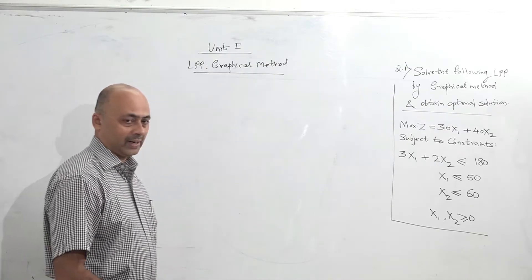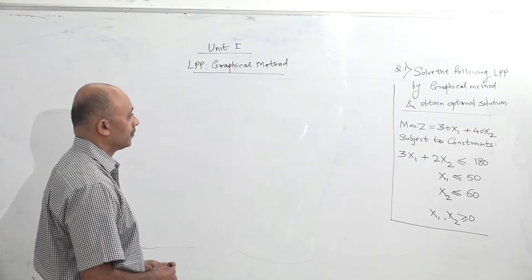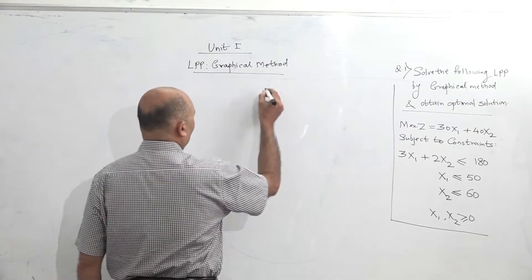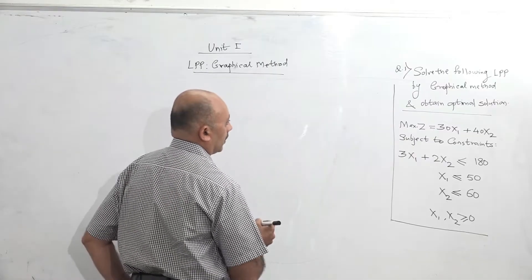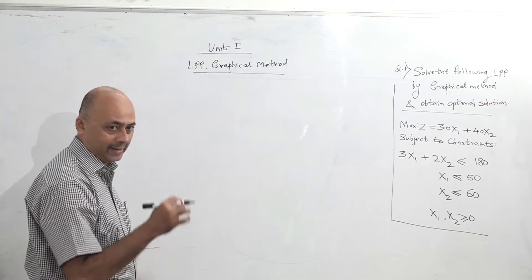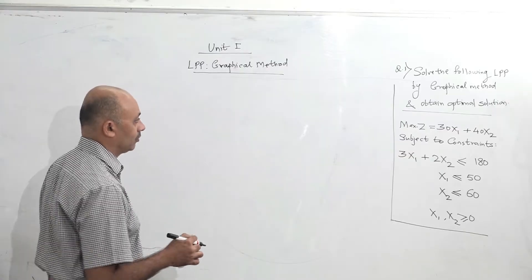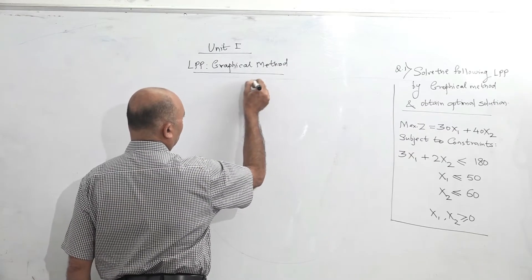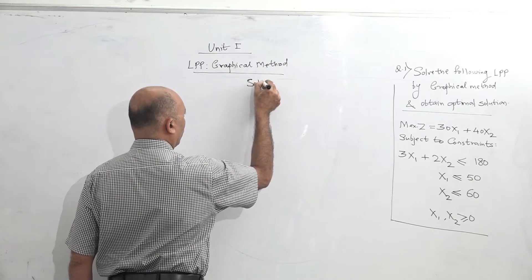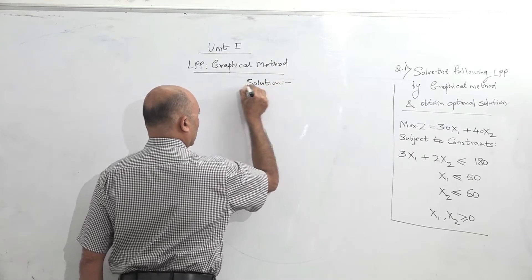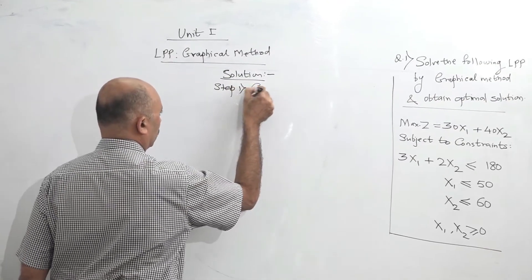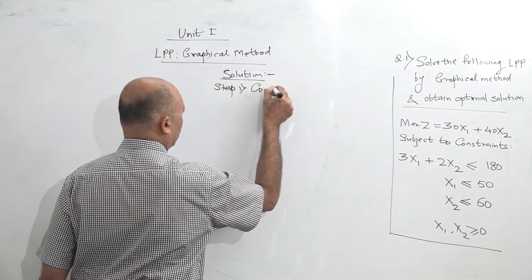So now with this we are going to solve using the graphical method. In the graphical method, the first step is obtaining the coordinates. Every graph has two directions, x1 and x2, that we call the axes of the graph. So first we will find the solution. Step number one is: coordinates of constraint lines.